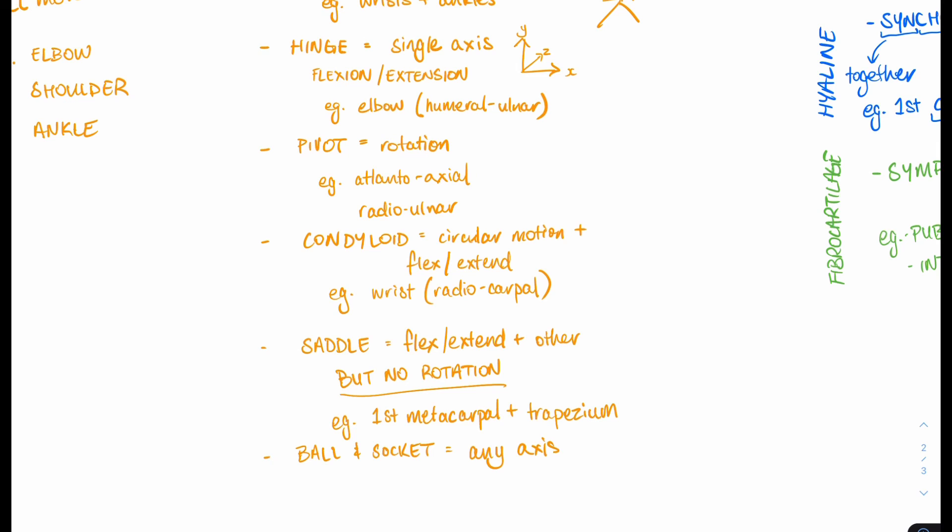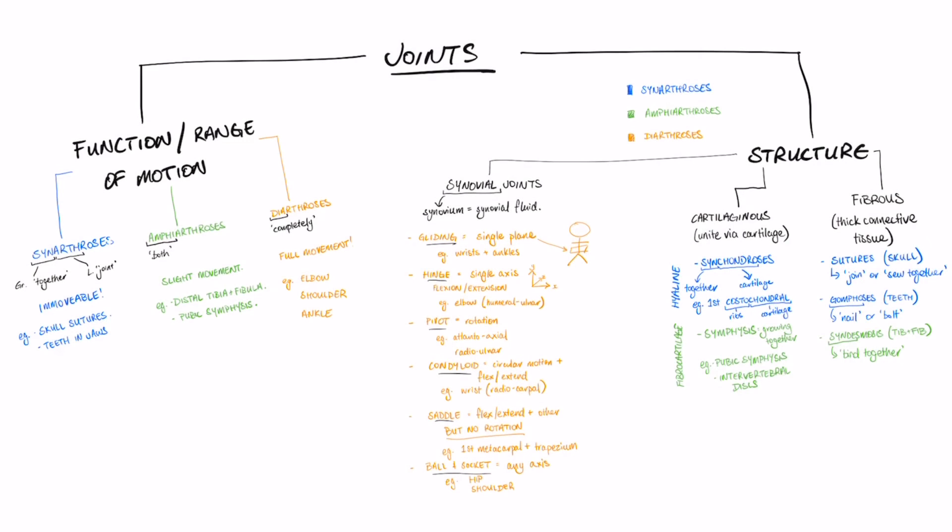And the last type of synovial joint is the classic ball and socket joint, whereby the ball is the head of the long bone, typically, and the socket found in the girdle. These are going to be our shoulder and hip joint, which allow for movement along any axis. So, you can flex, extend, abduct, adduct, roll it around, pending how good you are at the splits, but that'll be your ball and socket joints.